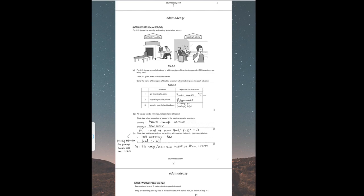For the boy using a mobile phone, it's microwaves. And for the security guard checking bags, it can be X-rays or visible light rays.